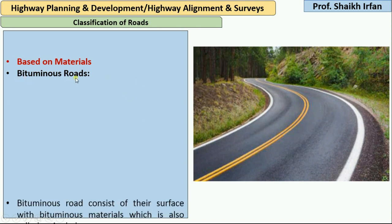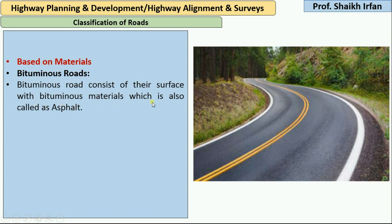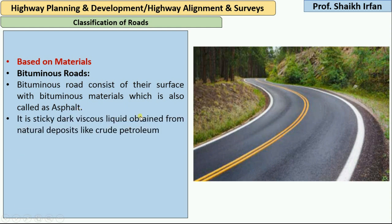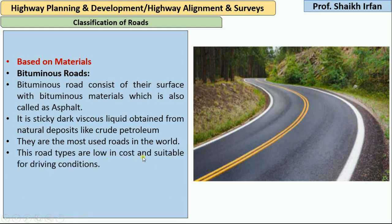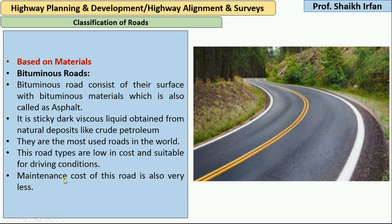The next type is bituminous road. Bituminous roads consist of a surface with bituminous material, also called asphalt. Asphalt is a sticky, dark, viscous liquid obtained from natural deposits like crude oil or crude petroleum. This type of road is most commonly used in the world. They are low in cost, suitable for every driving condition, and the maintenance cost is very less, so they have many advantages.